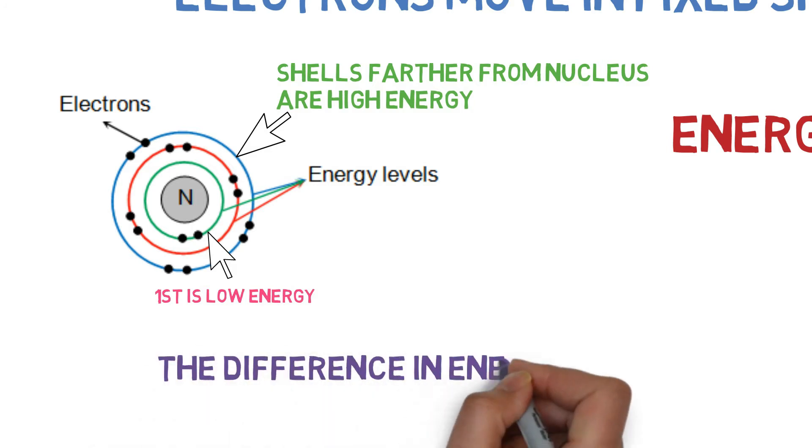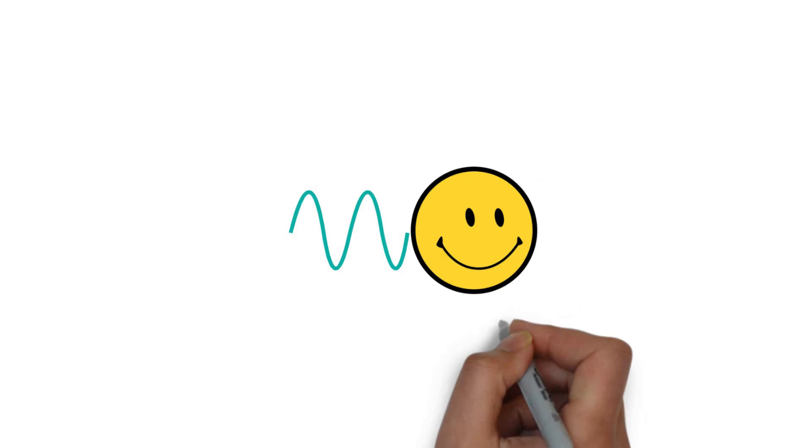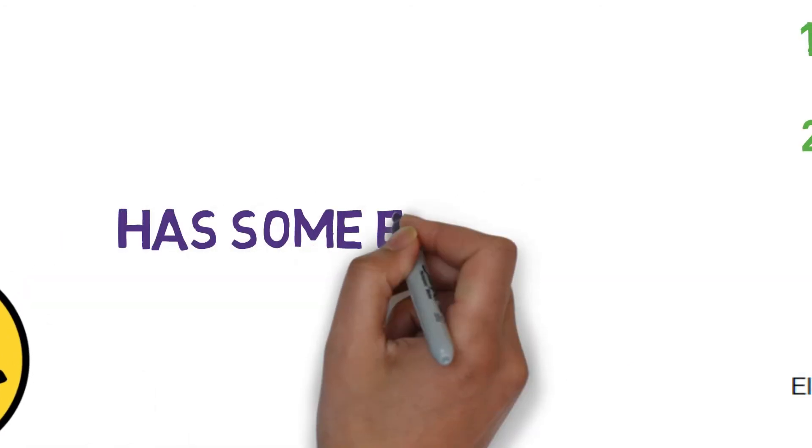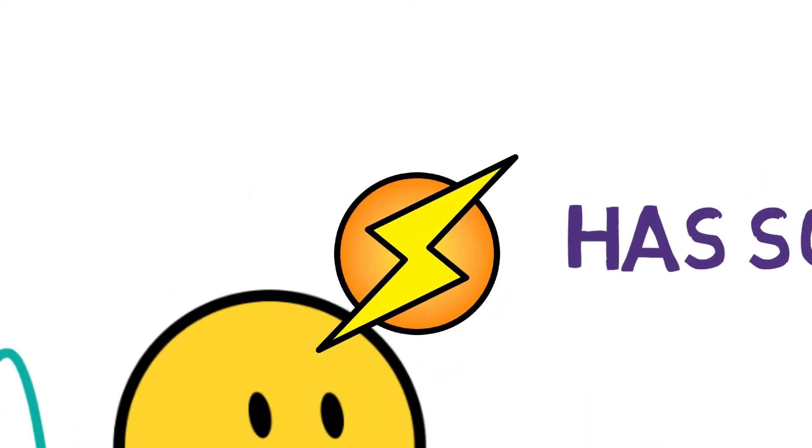The difference in energy of shells is called an energy gap. The unit of light, that is photon, has some energy linked to it. This means that photon is also an energetic particle.